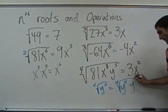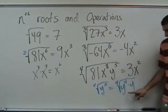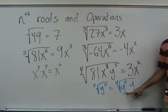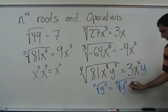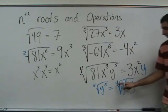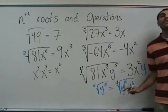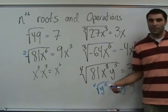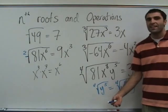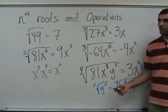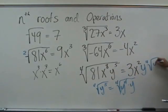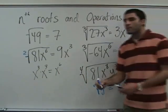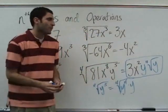The fourth root of y to the 4 is just y — correct. So this y to the 4 is taken care of. The fourth root of the remaining y is the fourth root of y — we can't simplify it further, so we write the fourth root of y.